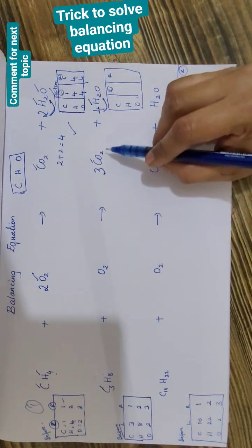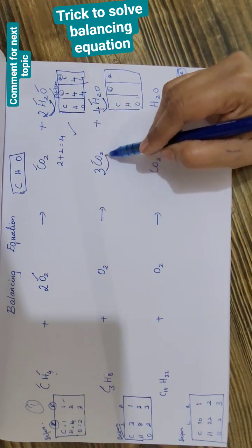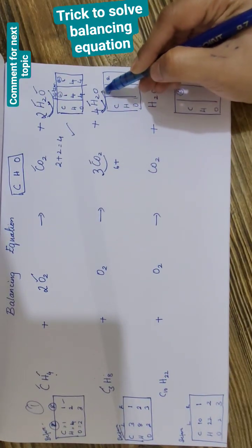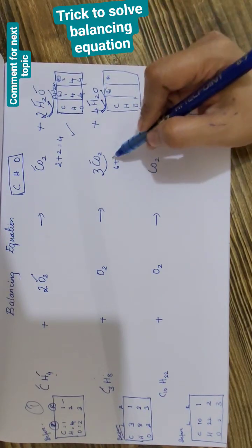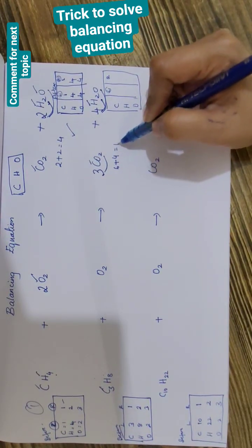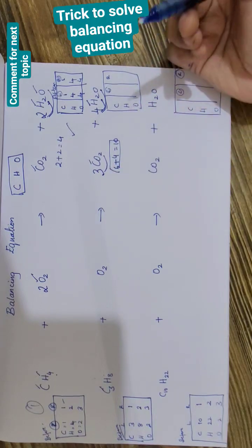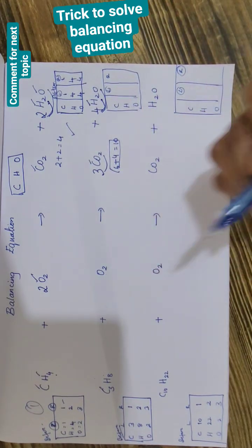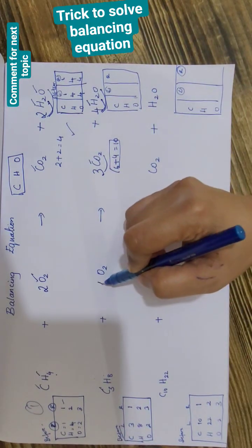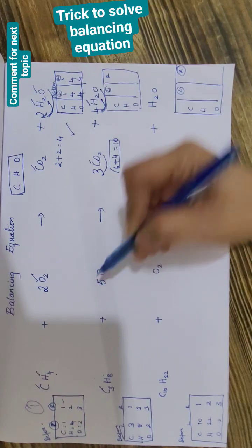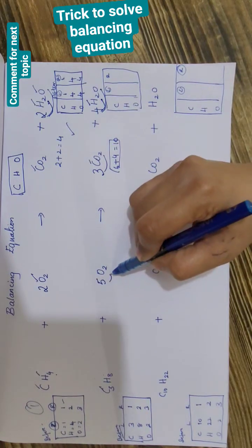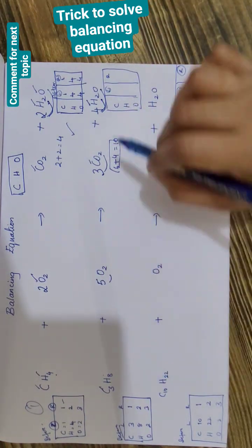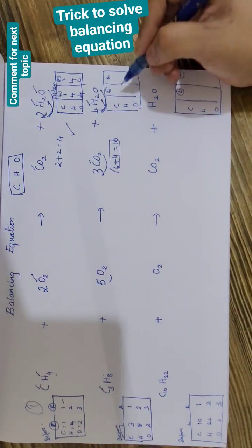How many oxygens are there? Three times two is six, plus four times one is four, which is ten. Ten oxygens are on the right side. I need to make ten on the left side as well, so I add five in front of oxygen. Five times two is ten. I think my equation is balanced now.